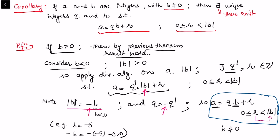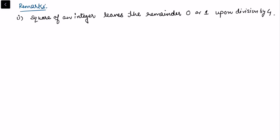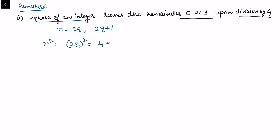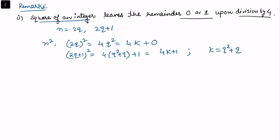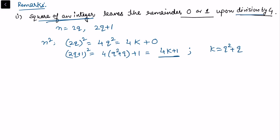As a first remark: the square of any integer leaves remainder 0 or 1 upon division by 4. Any integer n is either even (n = 2k) or odd (n = 2k + 1). Then n² = 4k², which equals 4·(k²) with remainder 0; or n² = (2k + 1)² = 4k² + 4k + 1 = 4(k² + k) + 1, which is of the form 4m + 1 with remainder 1.